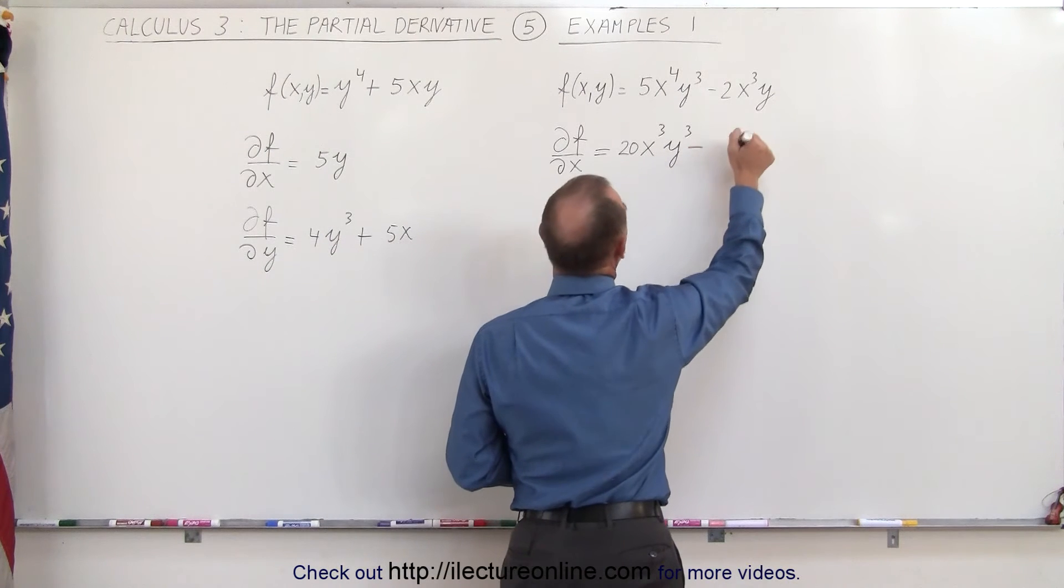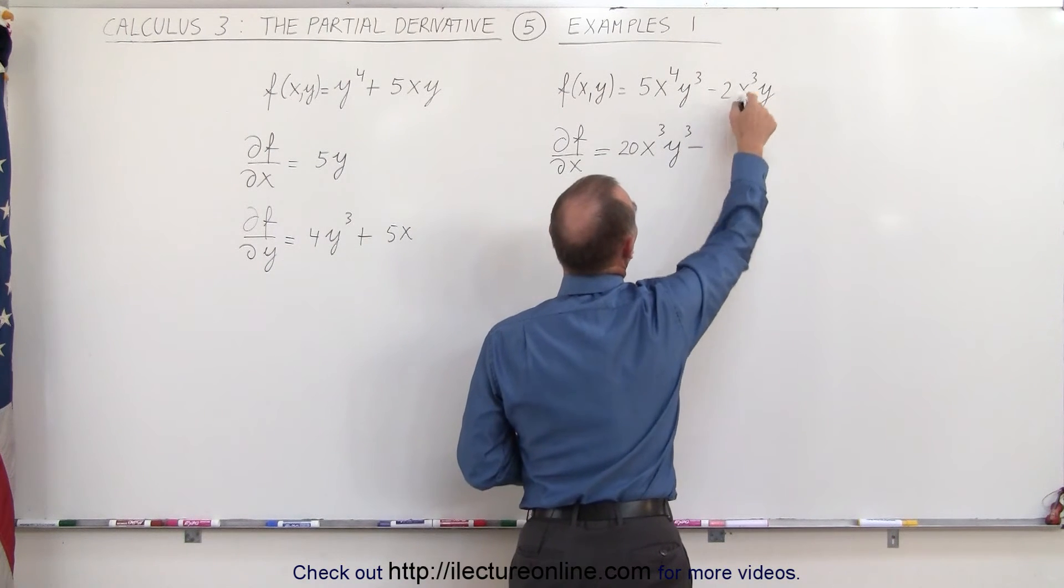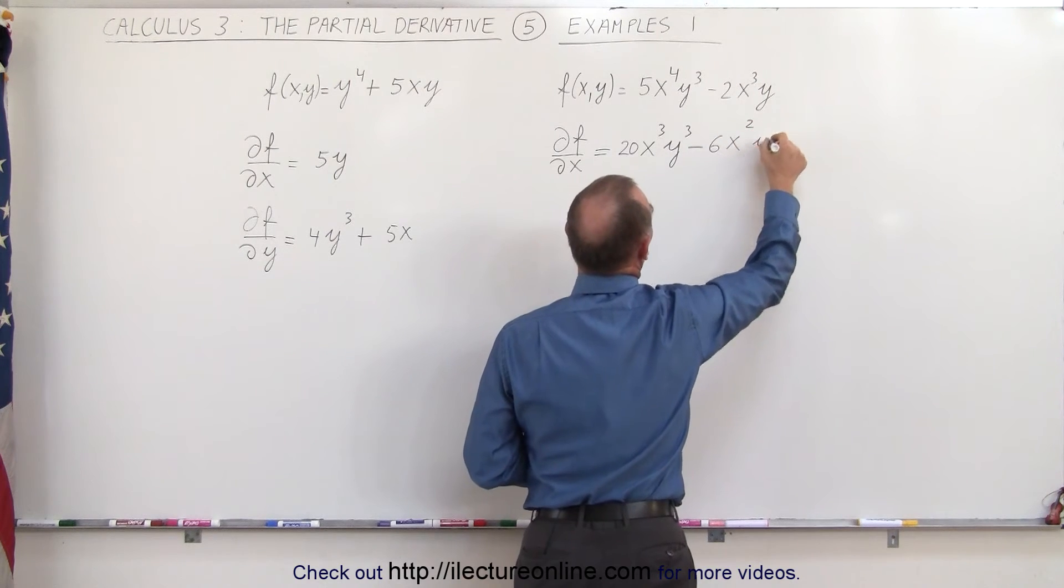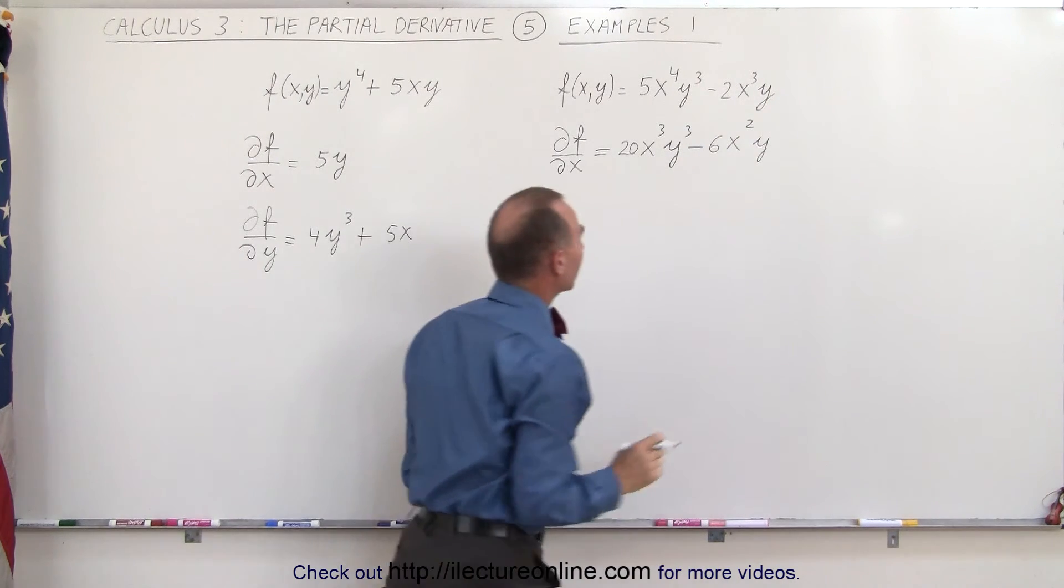On the second term, again, x is the variable, 2 times 3 is 6, x to the 2nd power times y because y is also a constant here.